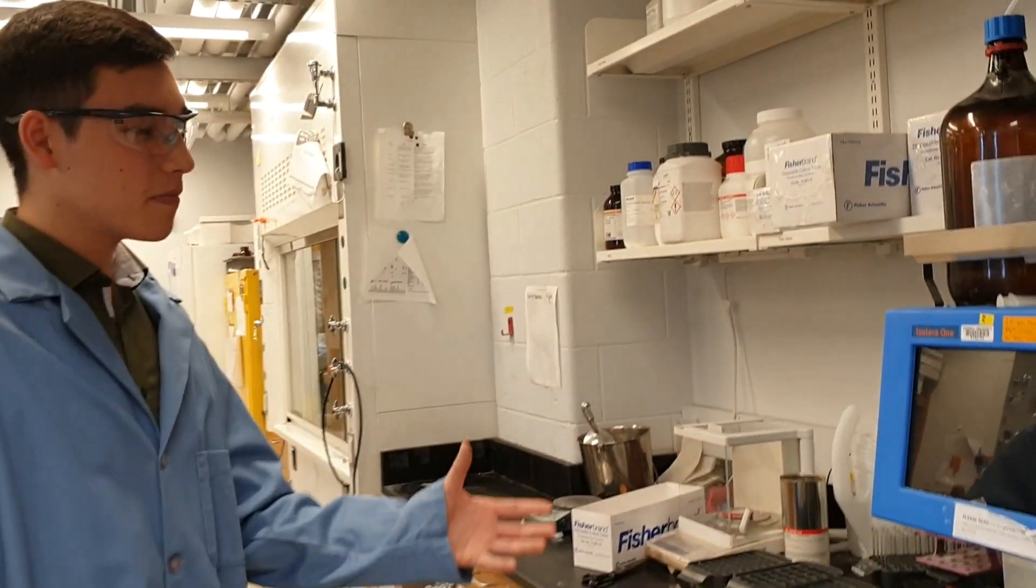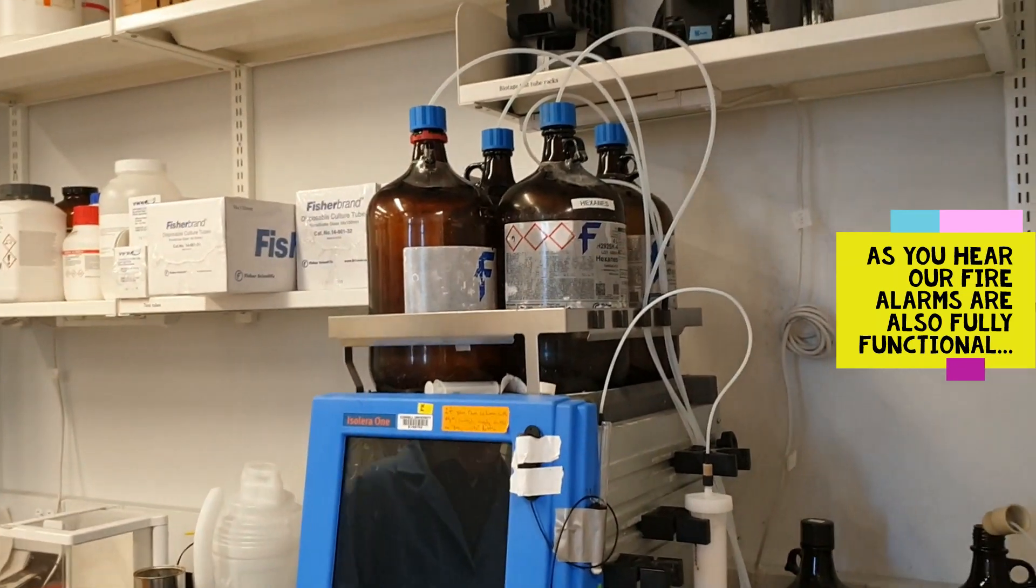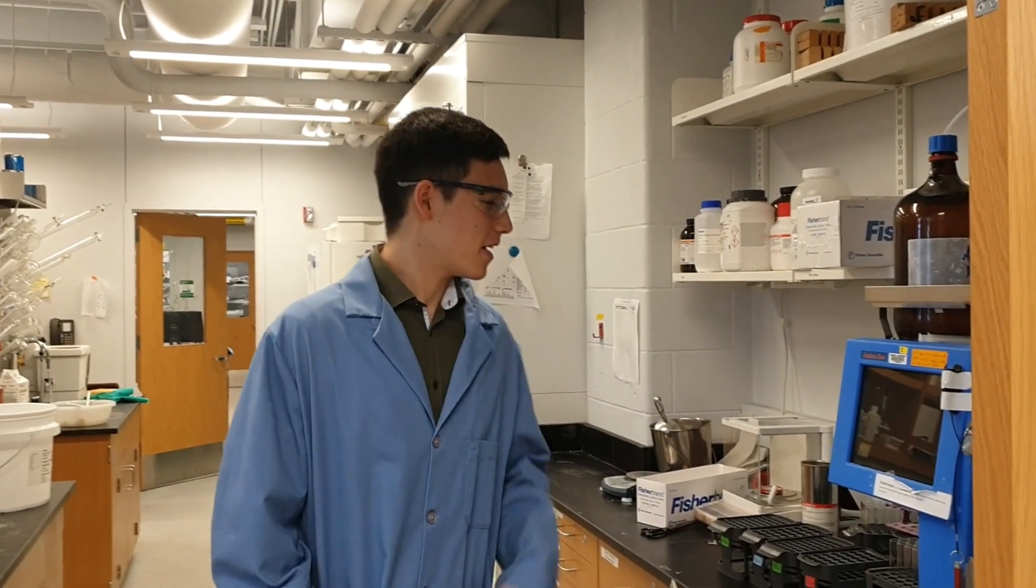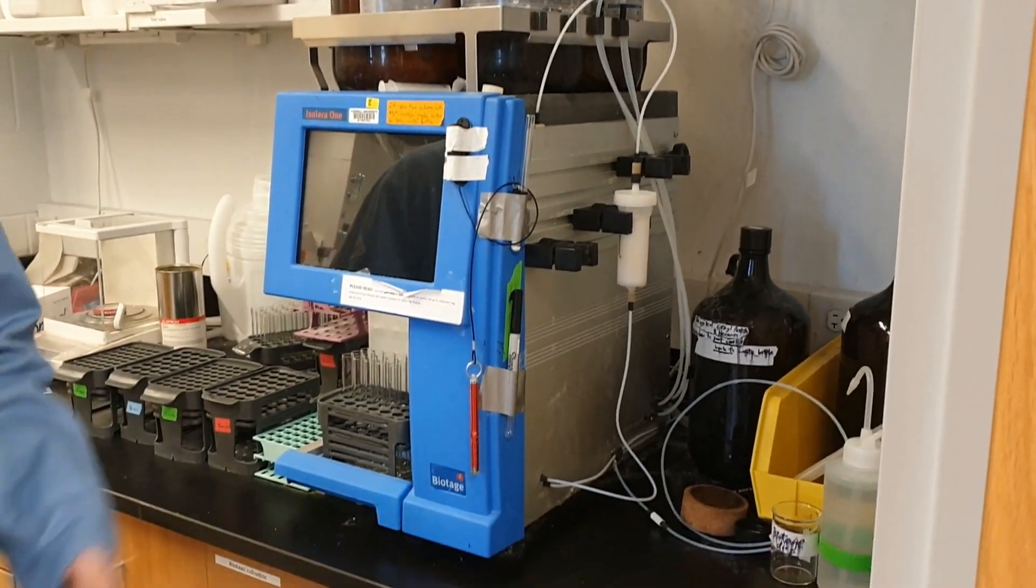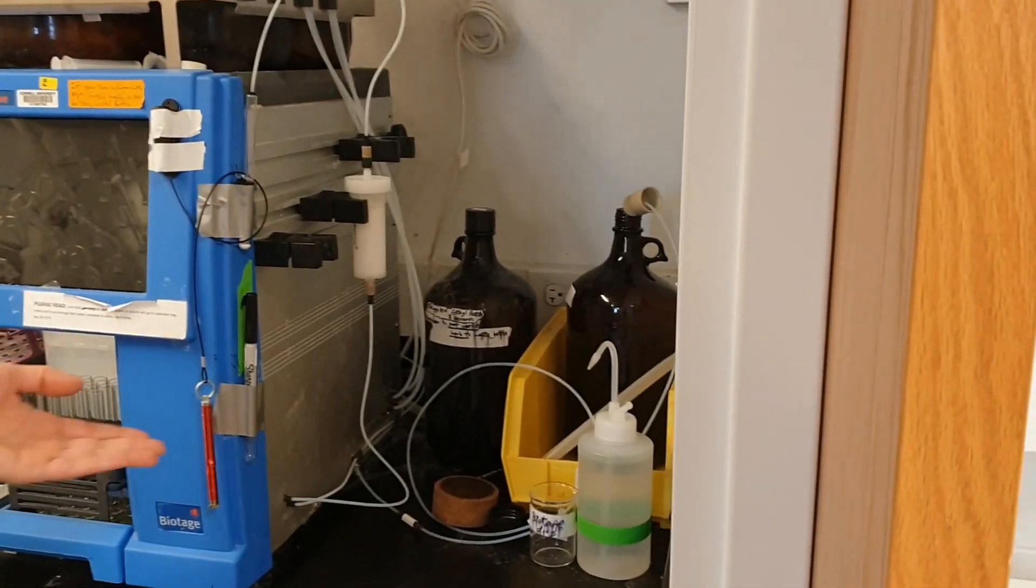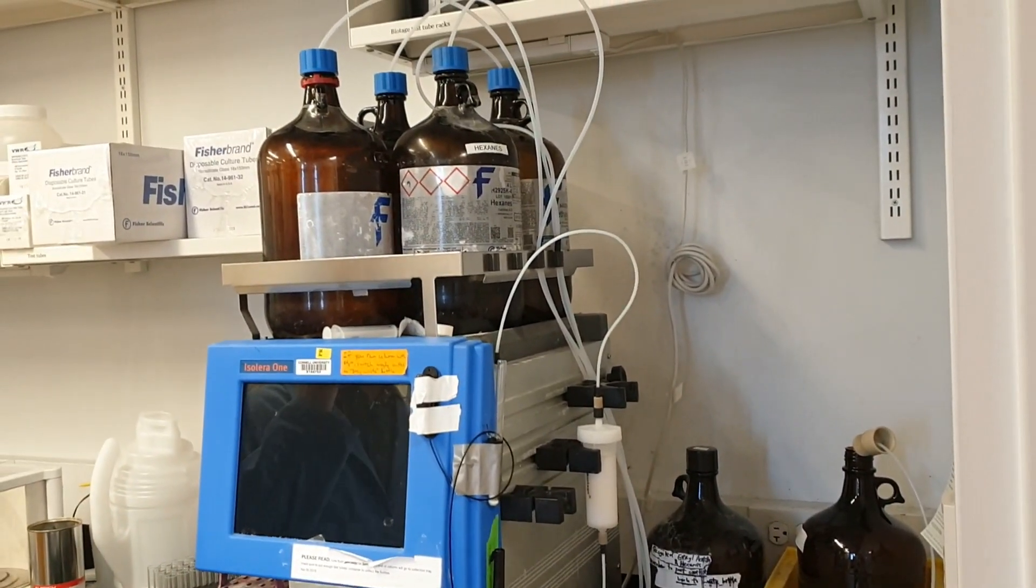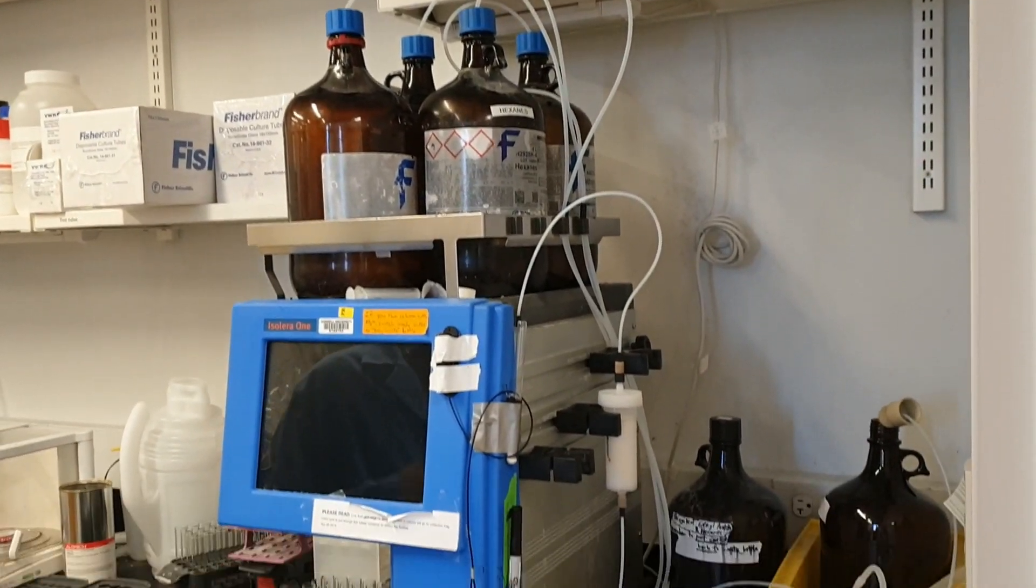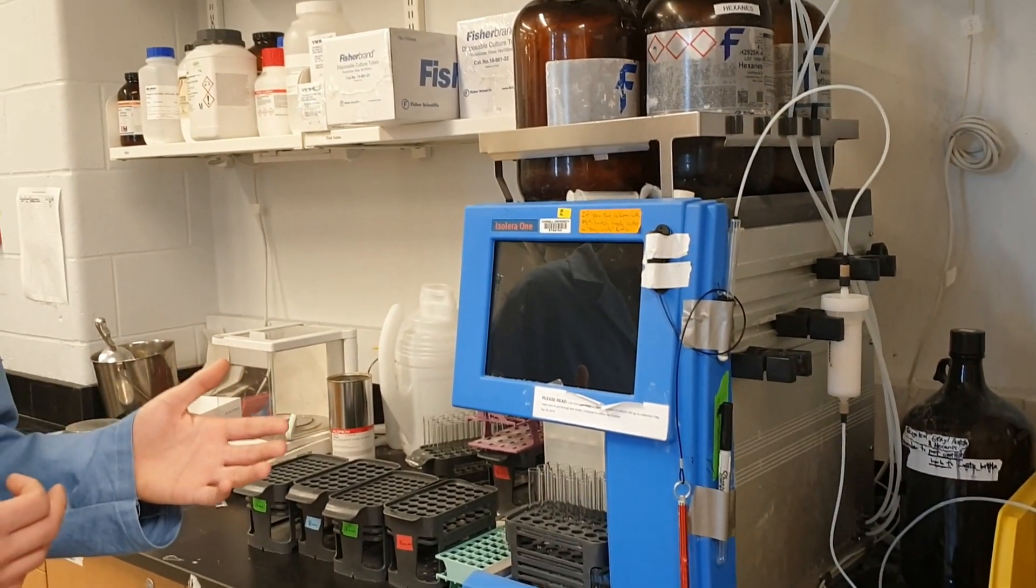Right next to the door, you can find our biotage, which you can use for running automated columns. Someone still has a column set up here. You'll just run your columns, walk away, do other chemistry, set up new experiments, and let the machine do the isolation of the compound for you.